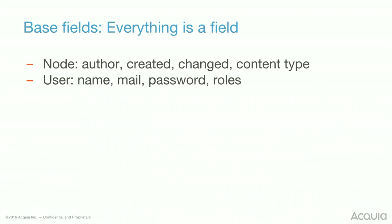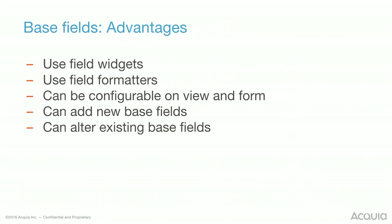Let's look at base fields. In Drupal 8, everything is a field - pretty much everything. For example, things like node authored, changed, content type. Content type of a particular node is an entity reference field. In Drupal 7 there was a difference between properties and fields, but in Drupal 8 the things that you add are fields, and the things that core adds are also fields. The advantage is that all of these base fields can now use the same widgets and formatters you're used to for fields that you add, and you can configure them on the view and on the form. You can add new base fields and alter existing base fields really easily.